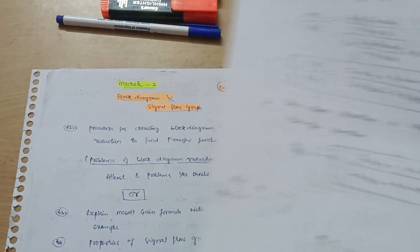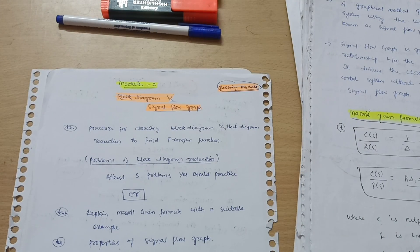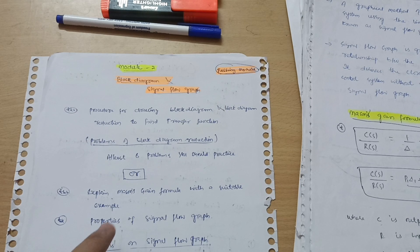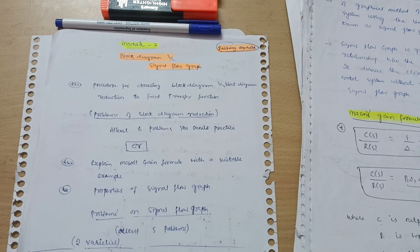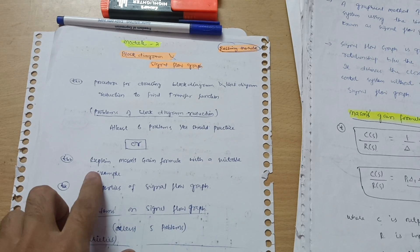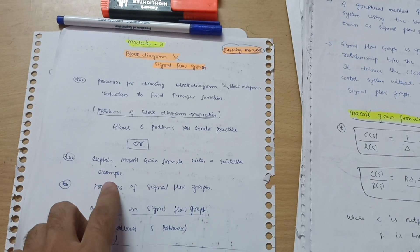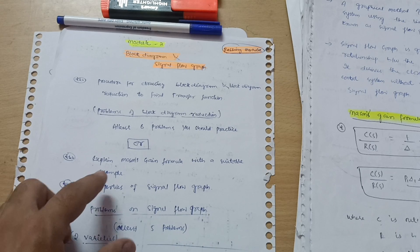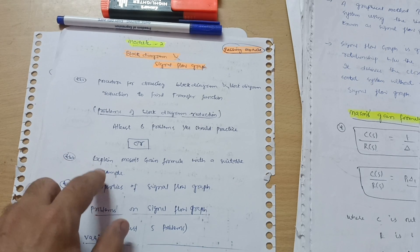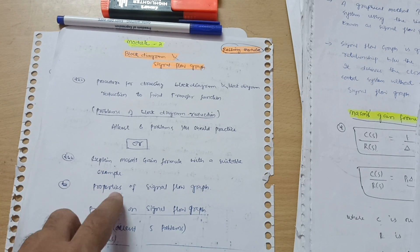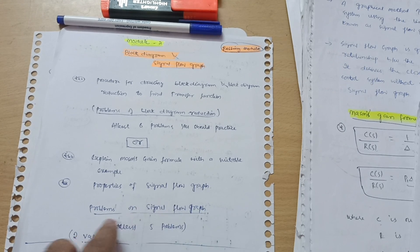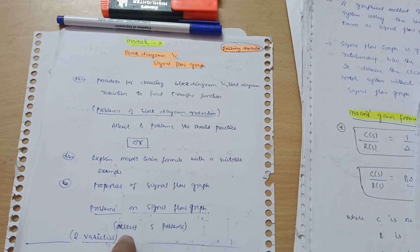If you are facing difficulties, you can comment down so that I can upload videos on block diagram technique. The next part is Signal Flow Graph — it depends on which you prefer. Explain Mason's Gain Formula with a suitable example is a likely question, and they may also ask about the properties of signal flow graphs. Practice at least five problems on signal flow graphs.